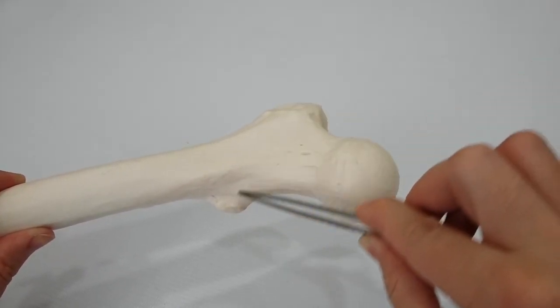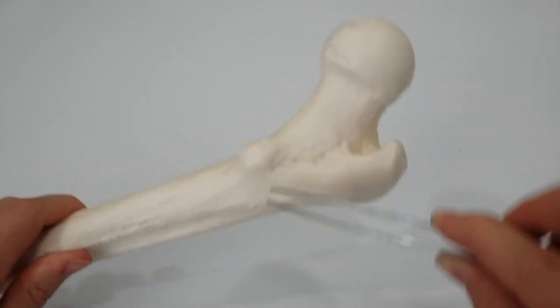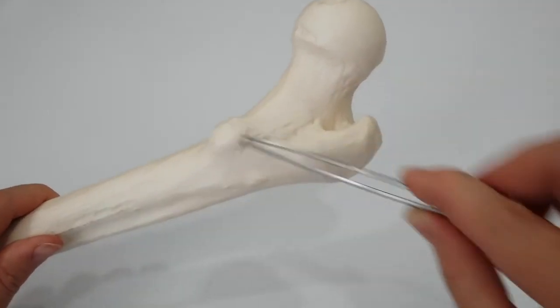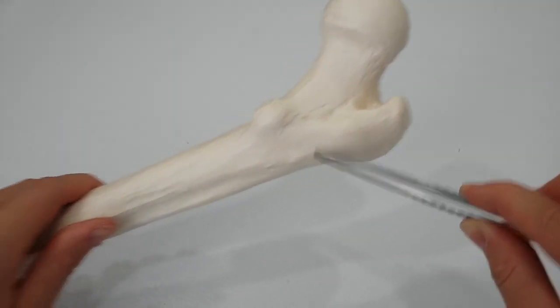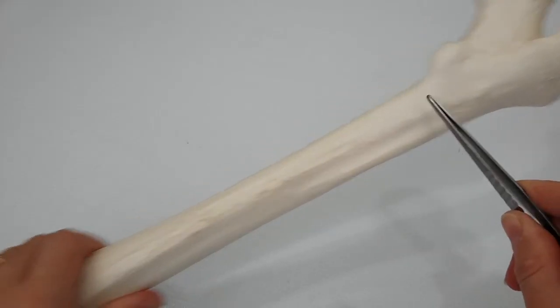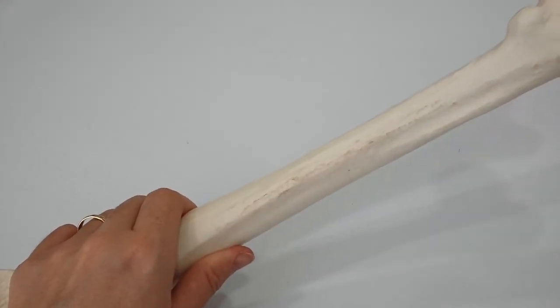Intertrochanteric line, intertrochanteric crest, quadrate tubercle, shaft, gluteal tuberosity, linea aspera.